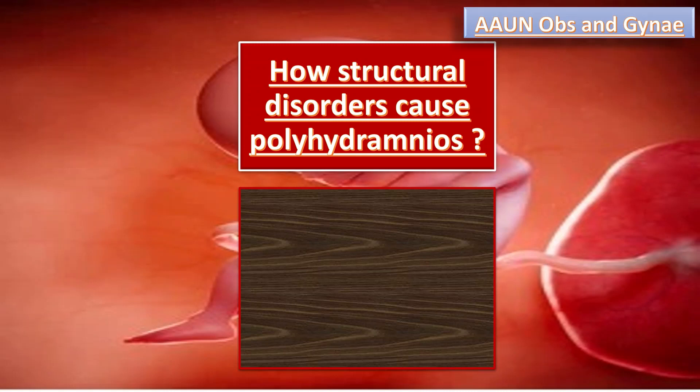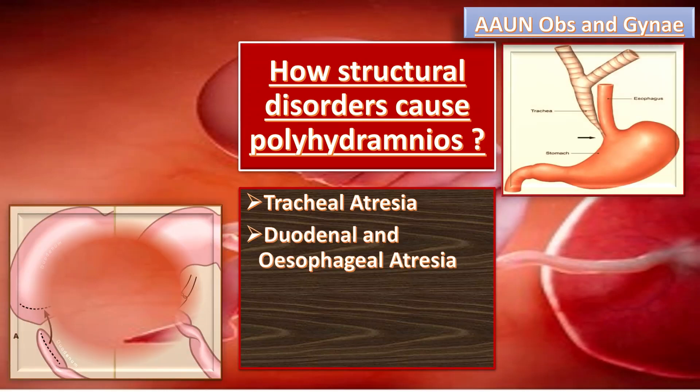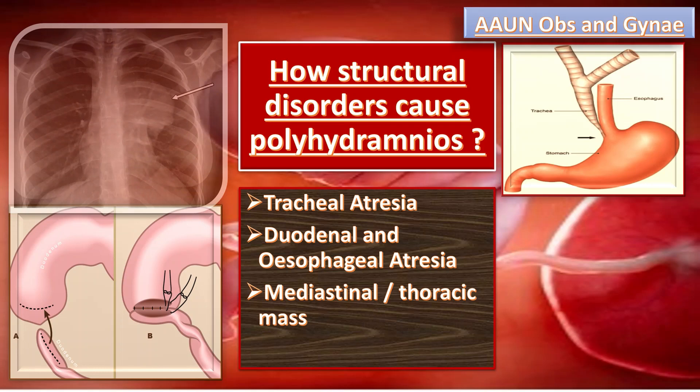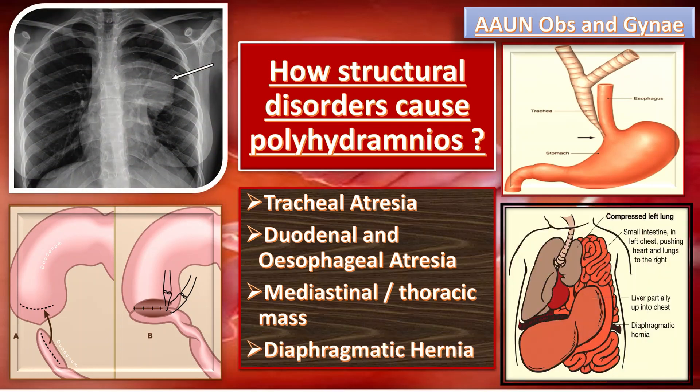Next, how do structural causes lead to polyhydramnios? All structural causes of polyhydramnios, such as tracheal atresia, duodenal and esophageal atresia, mediastinal and thoracic masses, and diaphragmatic hernia, result in poor swallowing of amniotic fluid, resulting in polyhydramnios.